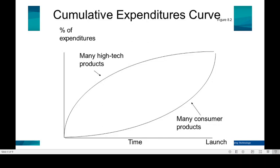There is a higher curve for high-tech products, such as pharmaceutical, optics, and computer industries, where research and development is the big part of the cost package, while marketing only costs relatively small. The lower curve in this figure shows the opposite — products from consumer goods companies require a small expenditure in technical development, but a huge cost of advertisement or marketing is needed at the end of the launch.